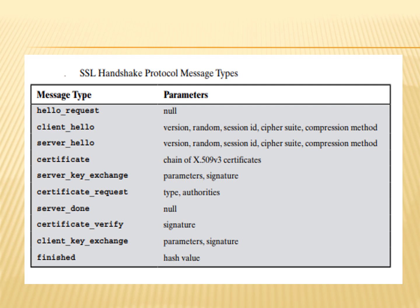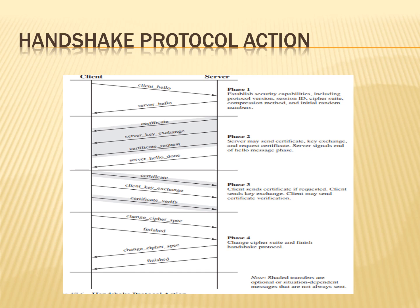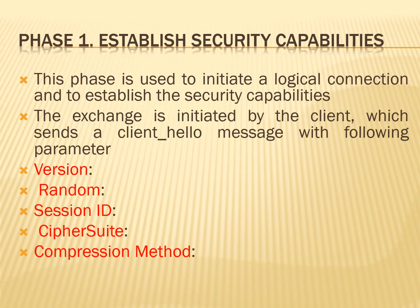The table shows the secure socket layer Handshake protocol message types, and this is the diagram of Handshake protocol action. In this there will be four phases: phase one, phase two, phase three, and phase four. Phase one is the establishment of security capabilities. This phase is used to initiate a logical connection and also to establish the security capabilities that will be associated with it.